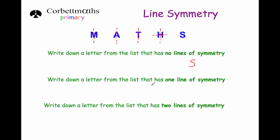The next question asks for a letter with one line of symmetry. We've got a choice of M, A, or T, but since the question asks for a letter, let's just choose M. And the last question asks for a letter with two lines of symmetry — that will have to be the letter H. And that's it.